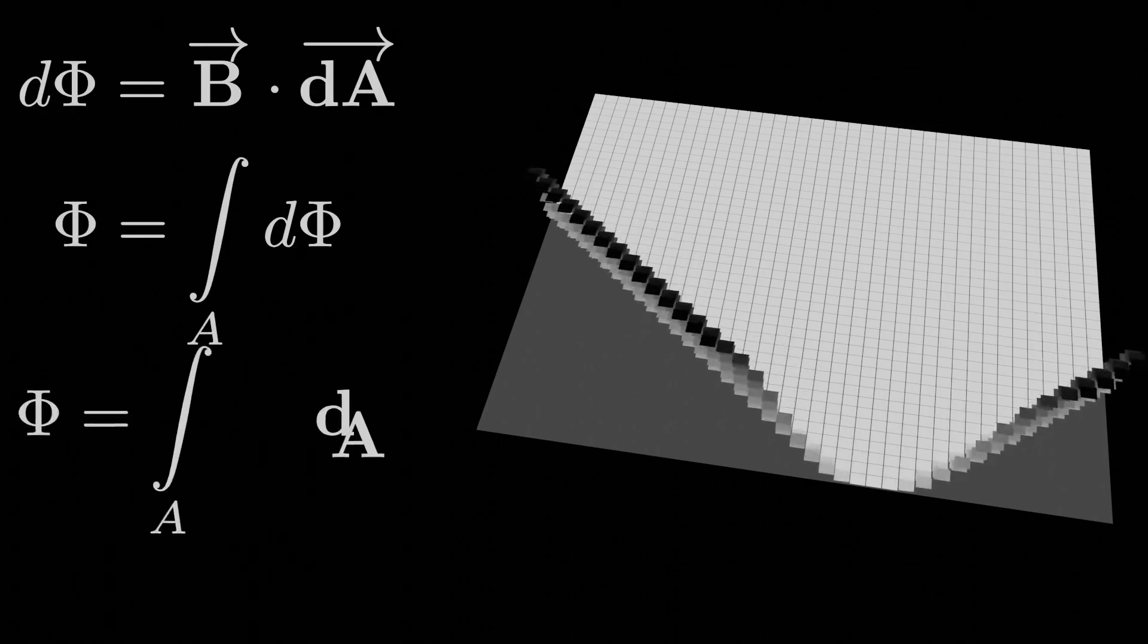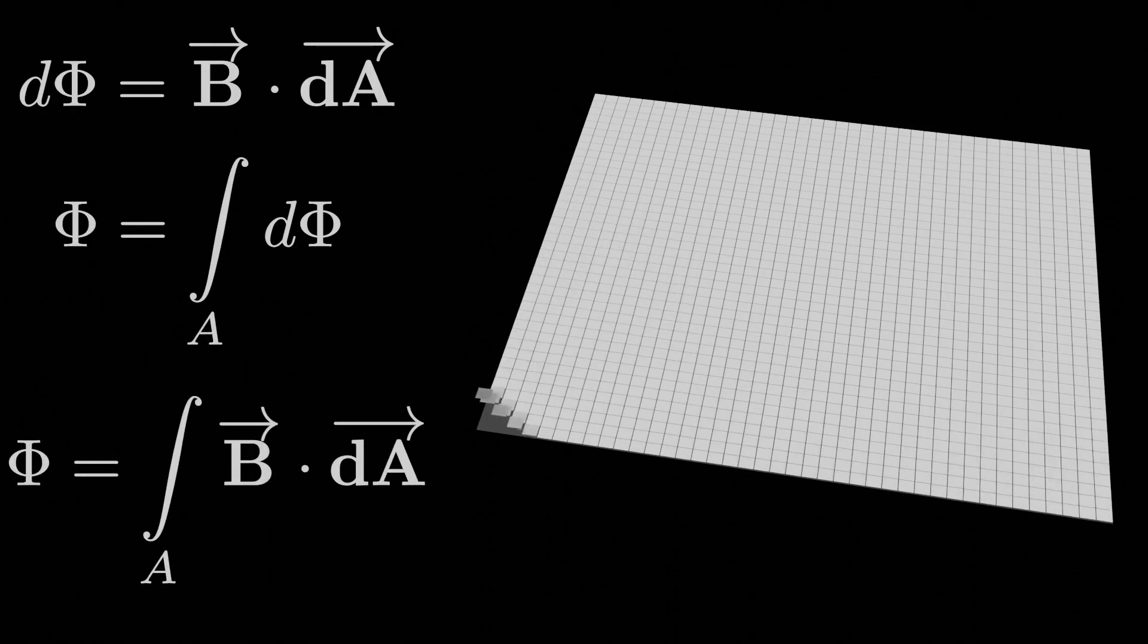So the flux d phi through that tiny area element is just B dot dA. Then adding up or integrating the flux B dot dA for every possible infinitesimal area element across the whole area, that's enough to determine the magnetic flux through the whole area. A neat example of this would be if you had a long, straight current-carrying wire right next to a rectangular loop, and you want to know the magnetic flux through the loop.